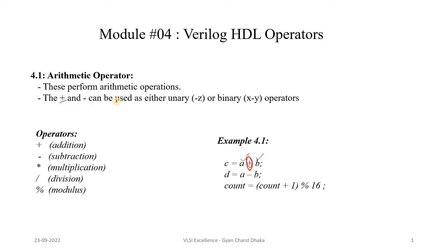The plus and minus can also be used as a unary operator and they can also be used as a binary operator. Binary operator means there are two operands, and unary means there is a single operand on which the operation has to be performed. The arithmetic operators include addition, subtraction, multiplication, division, and modulus operator.